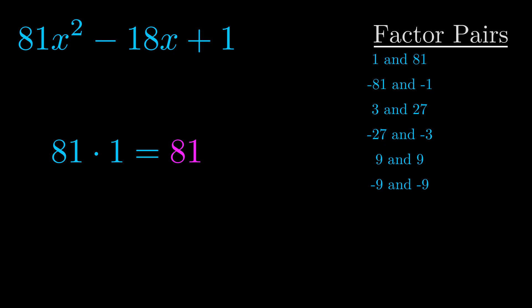The b value is the coefficient on the x term. That's the middle term, the one that we haven't done anything with yet. And really this is the only factor pair that we need.